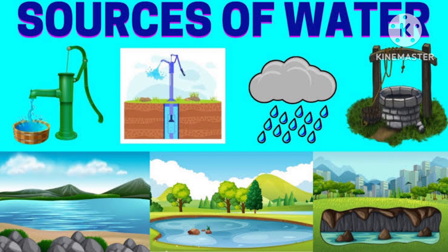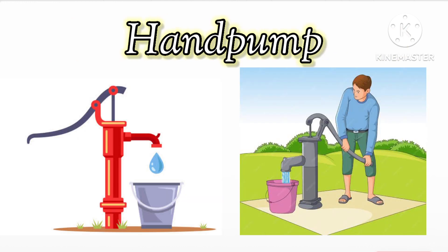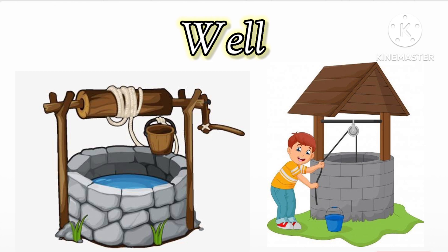First let us see what are the types. The first type is ground water sources — ground water means the water that comes from below the ground. The first ground water source is the hand pump; we press the hand pump and get water from the ground. The next is tube well, and then there is the well, from which we also get water.